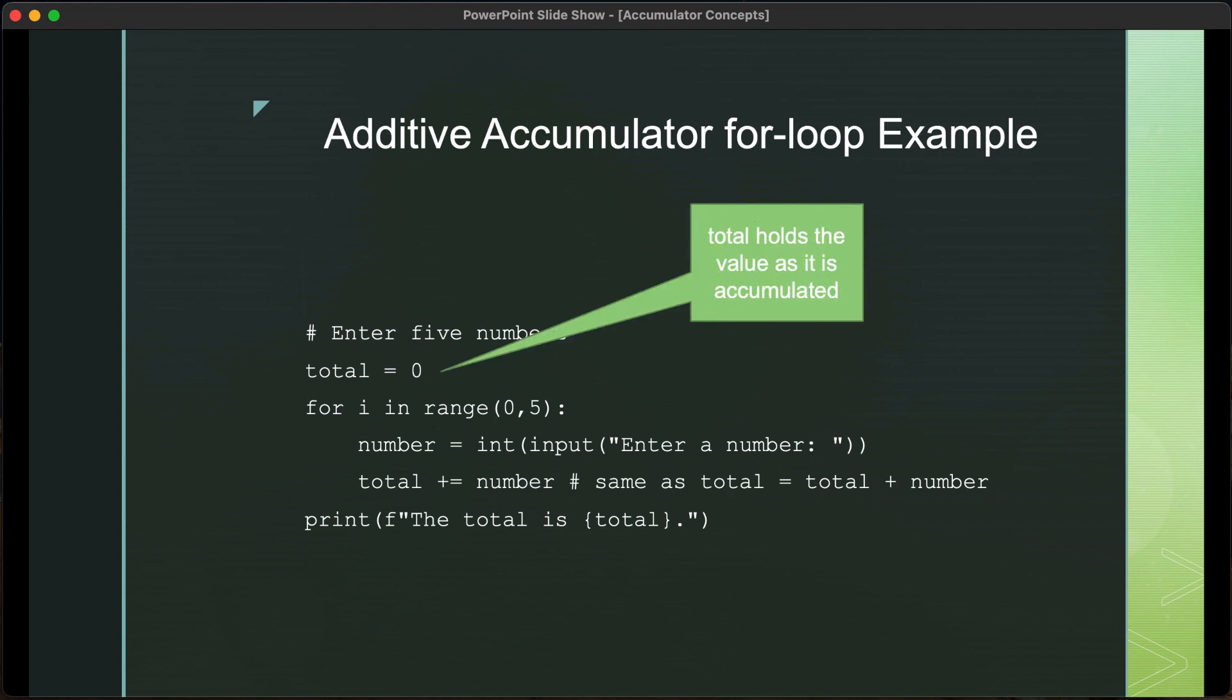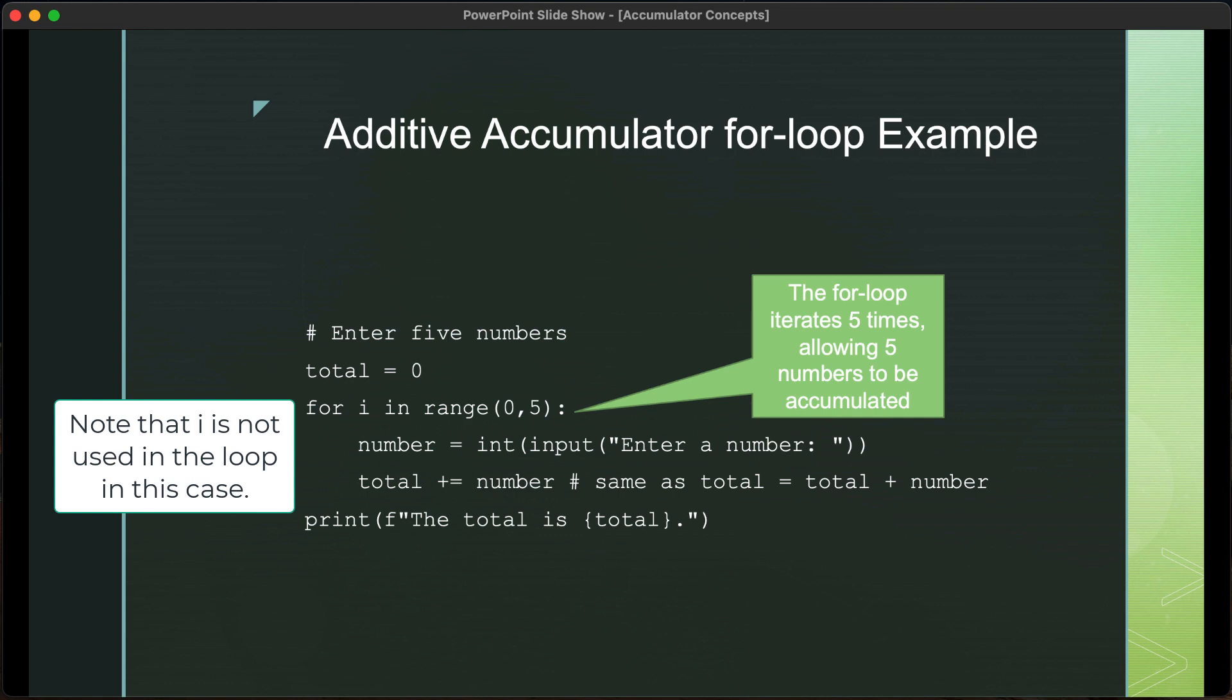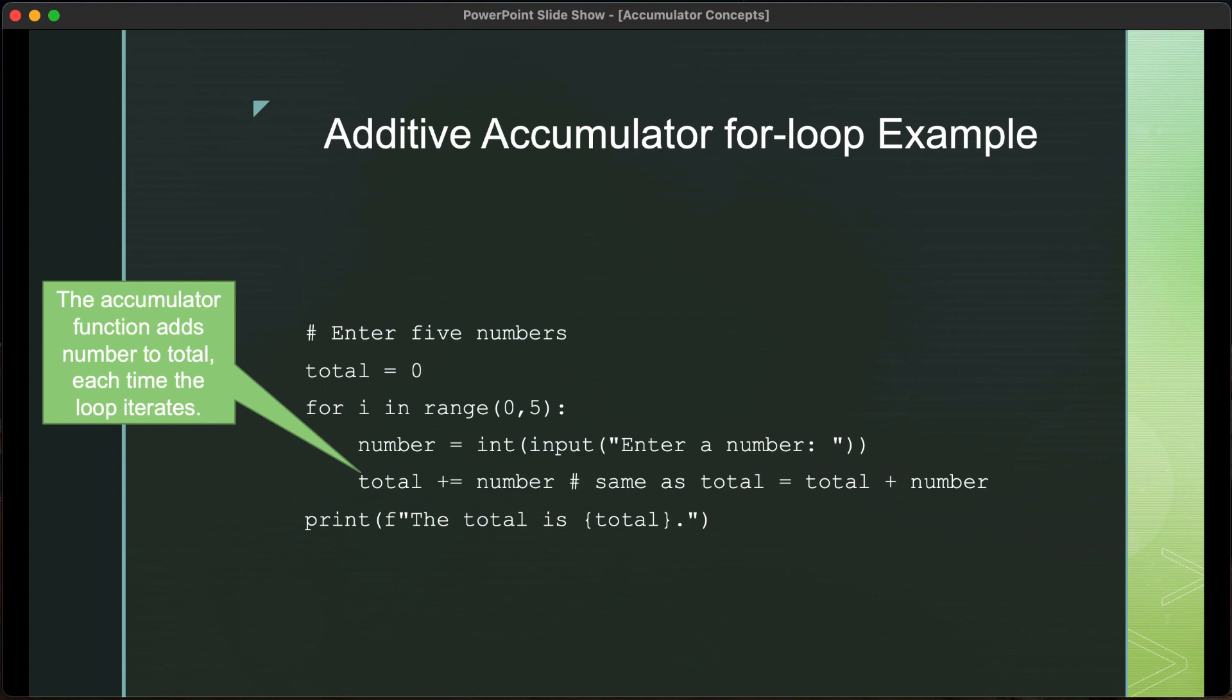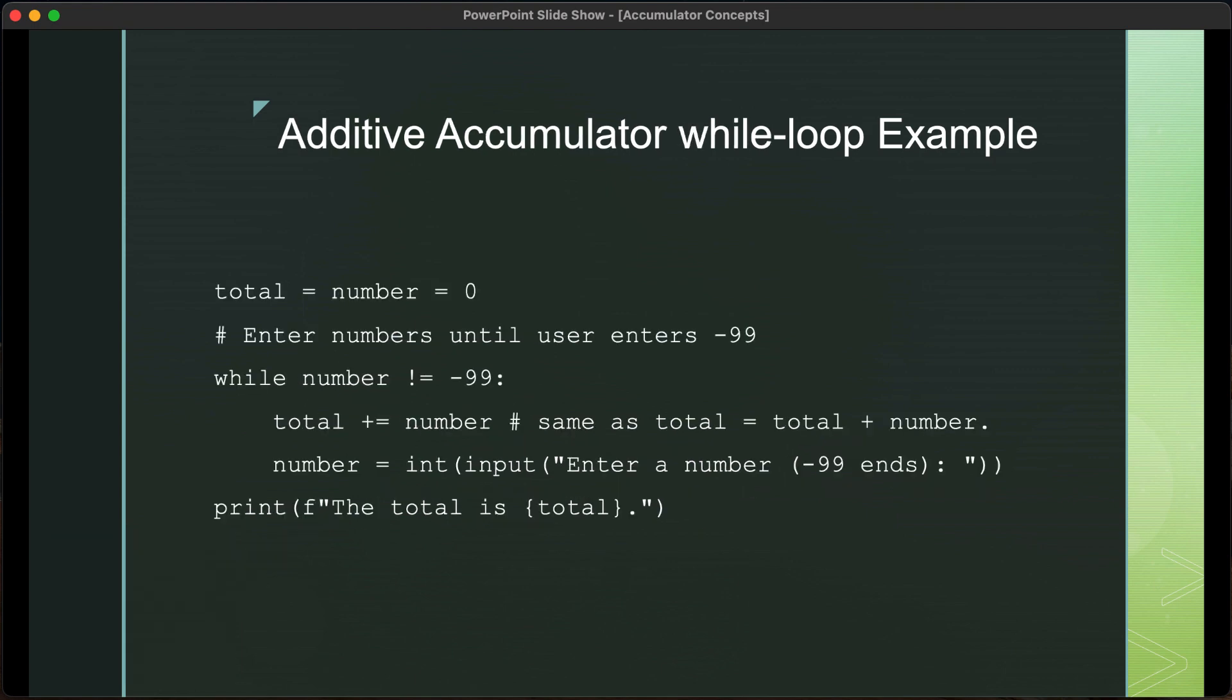Total, remember, the variable total will hold the value as it is accumulated. The loop will iterate through the numbers 0, 1, 2, 3, and 4. The user will enter the numbers one by one. The total accumulator function will hold the total number at that point in time each time the loop occurs. And then lastly, because the print statement is outside of the for loop, the total will be printed at the very end. Okay, so that's a for loop.